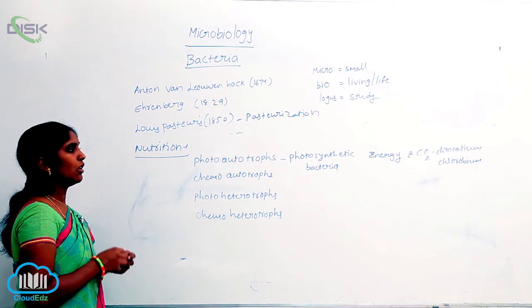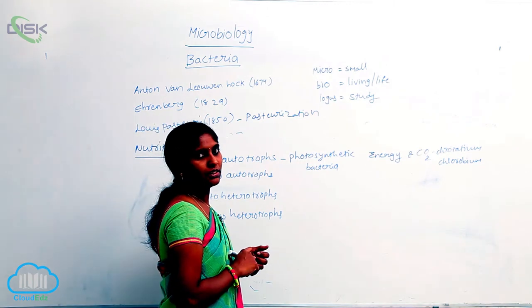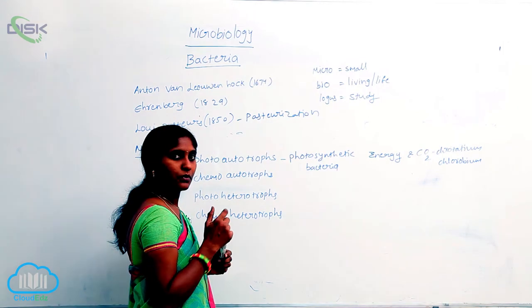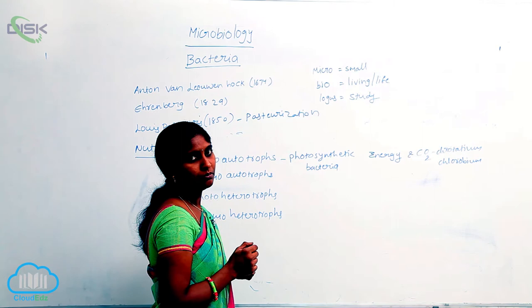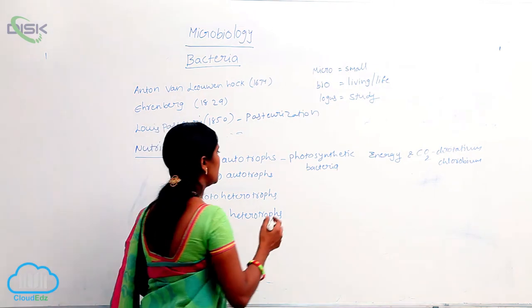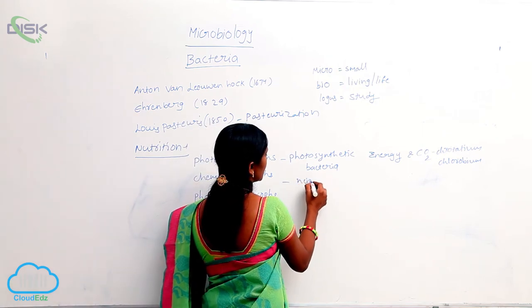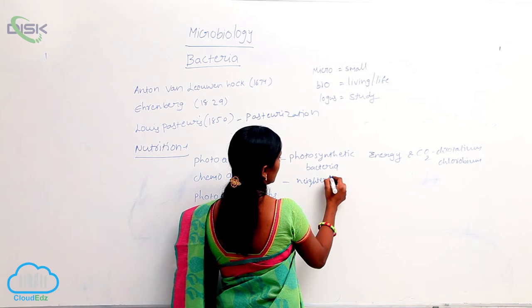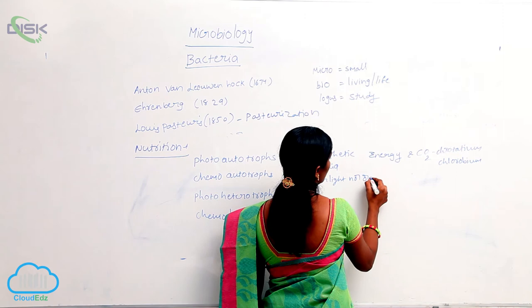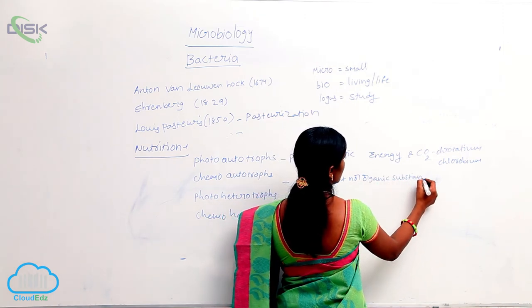Coming to chemoautotrophs: here the energy comes not from sunlight, but from inorganic substances. It means neither light nor organic substances — energy is derived from inorganic substances.